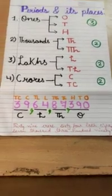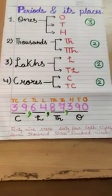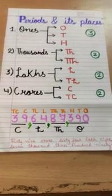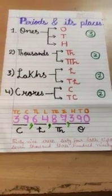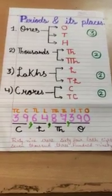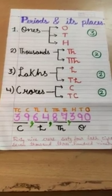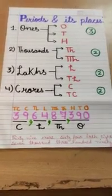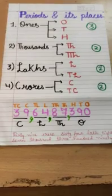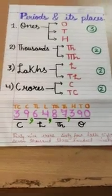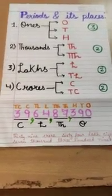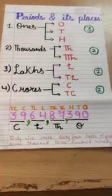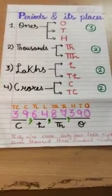So the final number name is: thirty-nine crores, sixty-four lakh, eighty-seven thousand, three hundred ninety. This is the number name in the Indian place value system. Now we are going to start Exercise 1A, questions one and two as classwork. Images will be shown for the classwork and for your home task along with the answer key. Please refer to the following images.